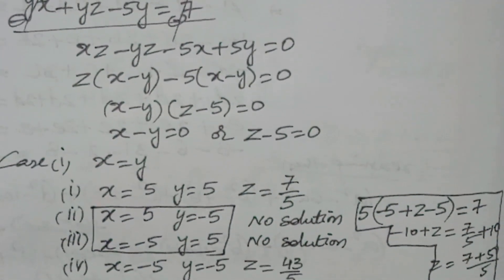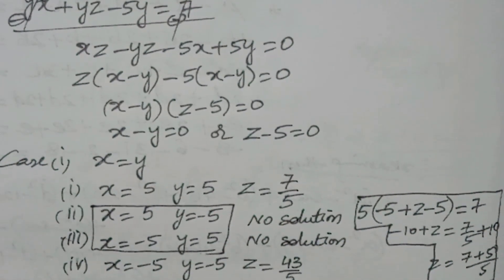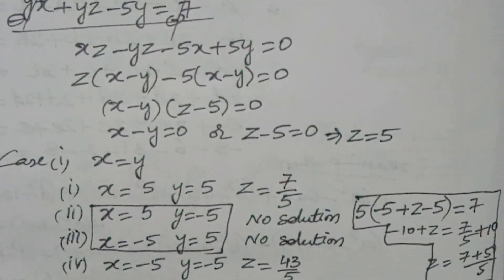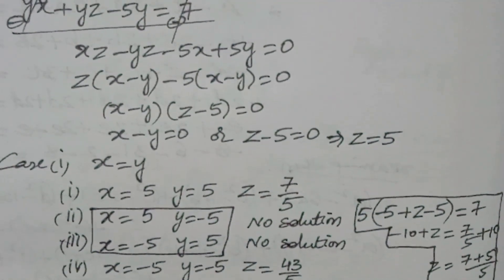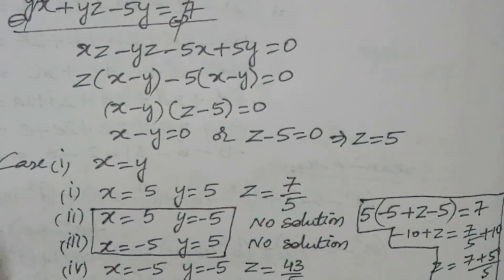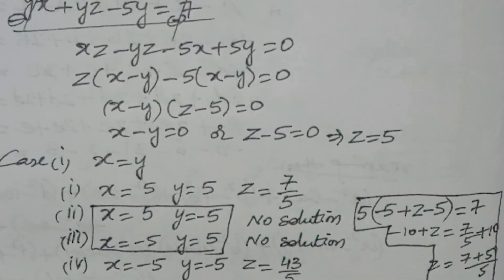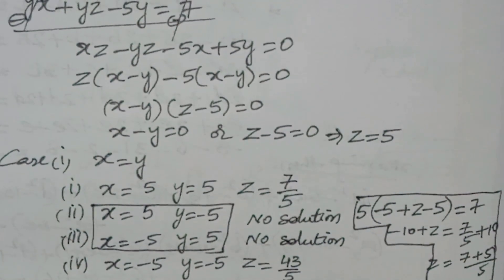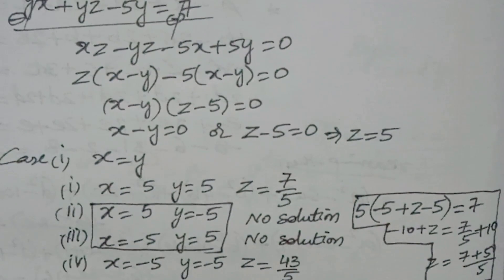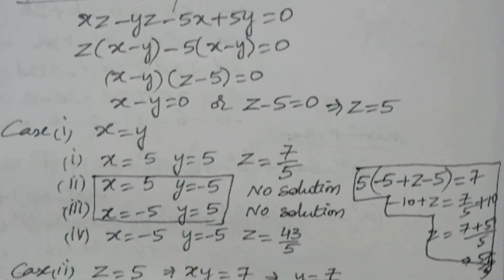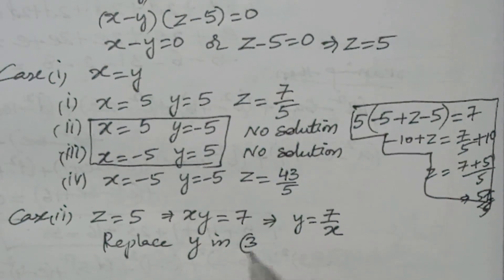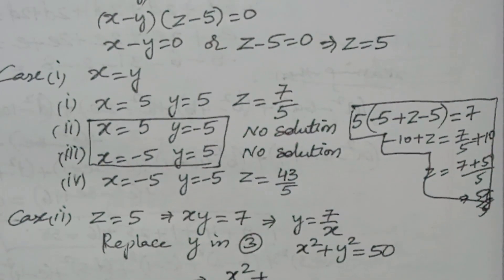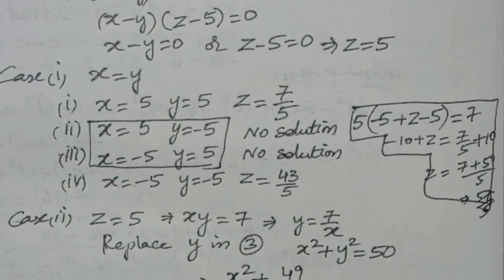Now Case 2: z = 5. Substituting z = 5 into equation (1): x(y + 5 − 5) = 7, so xy = 7. From this, y = 7/x. Replacing y in equation (3): x² + (7/x)² = 50, which gives x² + 49/x² = 50.